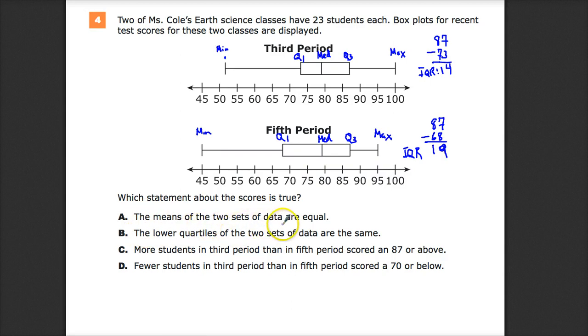B, the lower quartiles of the two data sets are the same. So when they say lower quartiles, I'm assuming they mean Q1. So Q1 here is 67. Q1 here is 73. So probably not.